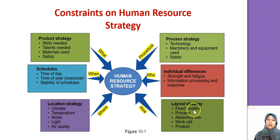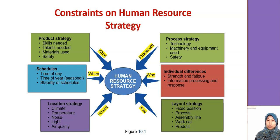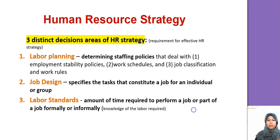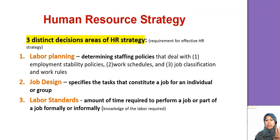The final constraint is layout strategy. If you use work cells, how many employees or workers are needed and how do you train them? If you use an assembly line, how many workers are needed for each workstation? All of these are things human resources need to think about, especially in manufacturing or service. There are three distinct decision areas: labor planning, job design, and labor standards.